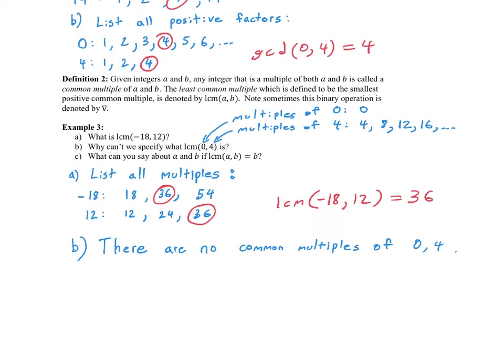What can we say about A and B if LCM(A, B) = B? B is a multiple of B — we knew that. But we can also say that B is a multiple of A.